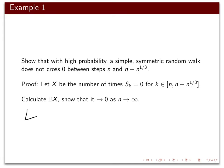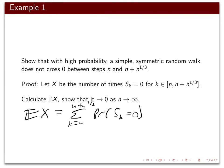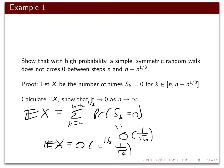The expectation of x is the sum from k equals n to n plus n^(1/3) of the probability that S_k equals zero, using linearity of expectation. For all k in this range, this probability is O(1/√n). So the expectation of x is O of n^(1/3) terms each of order 1/√n, giving O(n^(−1/6)), which tends to zero as n goes to infinity.